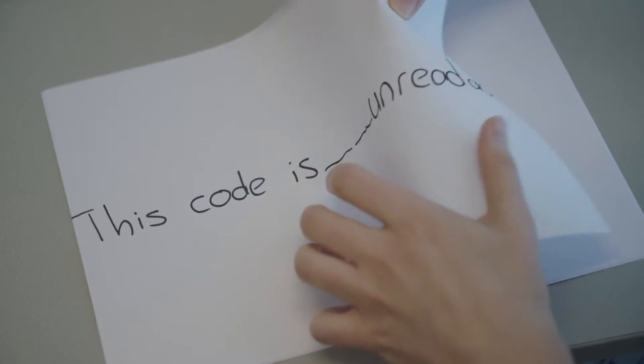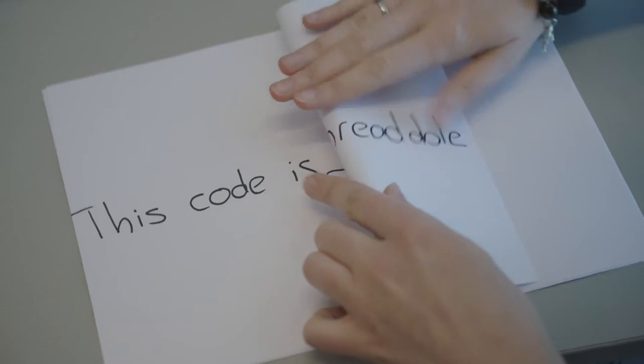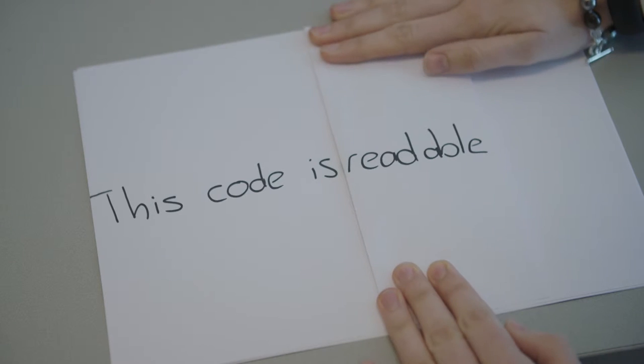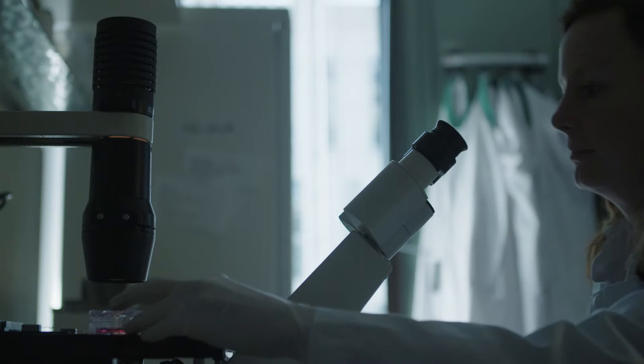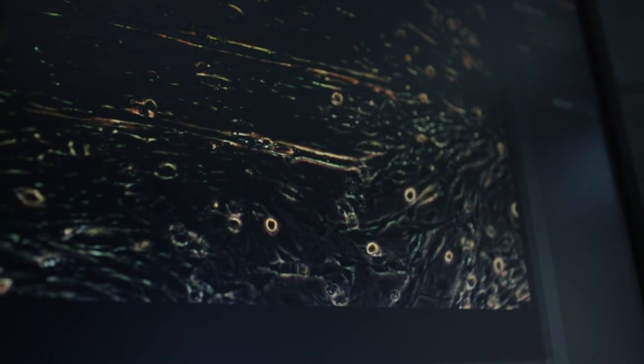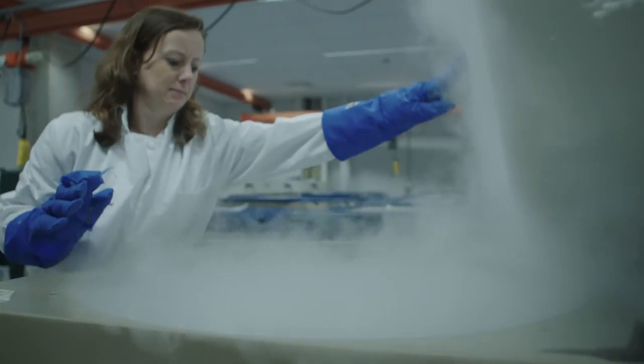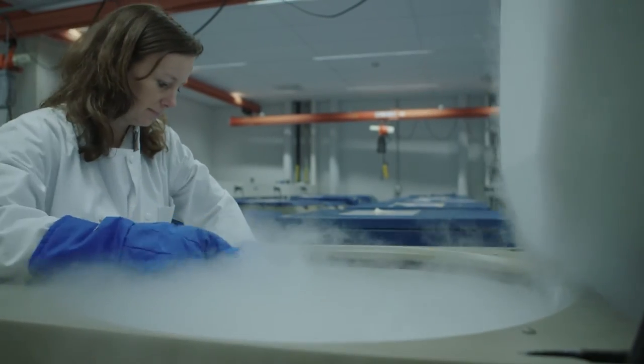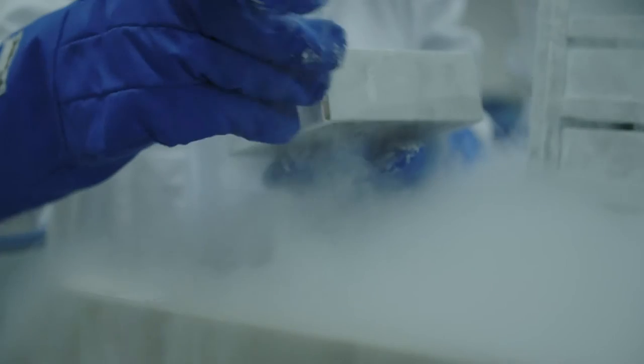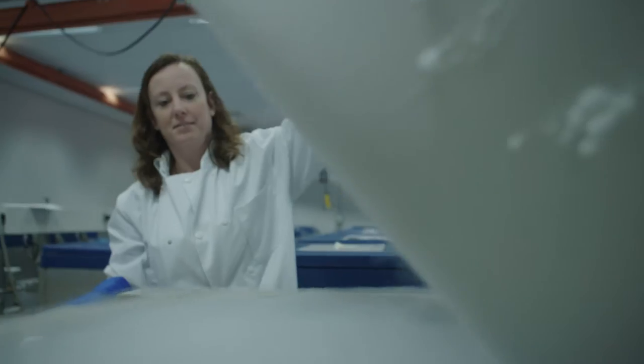What we thought with our therapy is: can't we play sort of hide and seek with the gene and hide the error in Duchenne patients in such a way that the code becomes readable again? We started 15 years ago at the very basic level with cultured cells from patients, and we could show that after we treated these cells with our compounds, they started to make dystrophin again. There was a lot of further development, but we also found a pharmaceutical company that wanted to partner with us, and they are now developing the compound further.